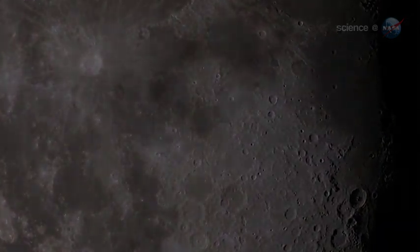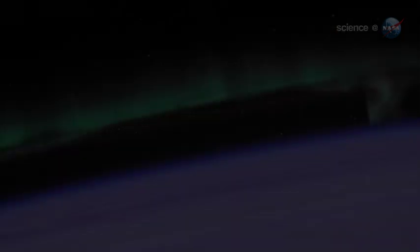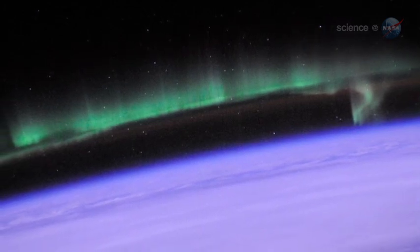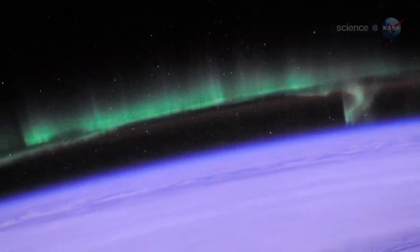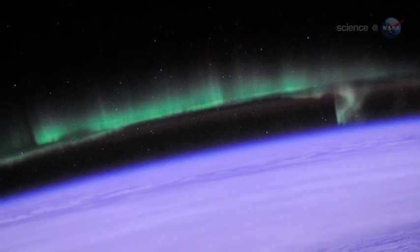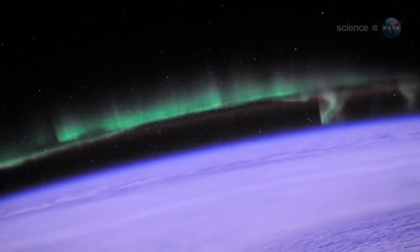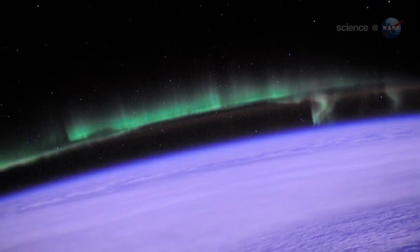But first, what is an ionosphere? Every terrestrial planet with an atmosphere has one. High above the planet's rocky surface, where the atmosphere meets the vacuum of space, ultraviolet rays from the Sun break apart atoms of air. This creates a layer of ionized gas, an ionosphere.